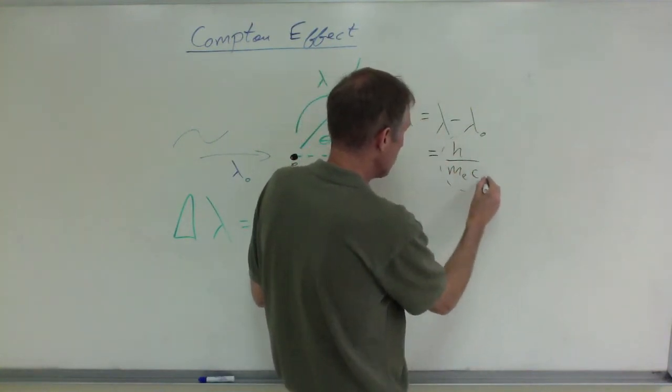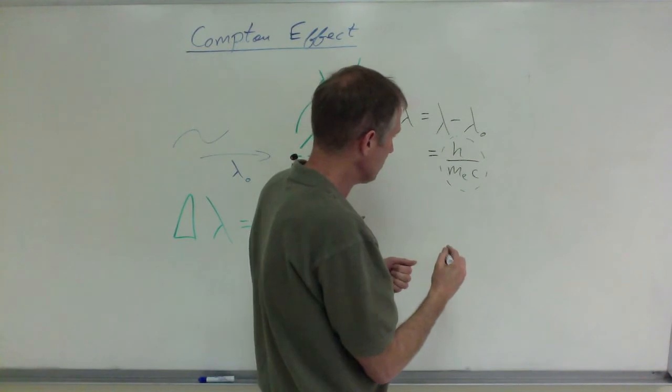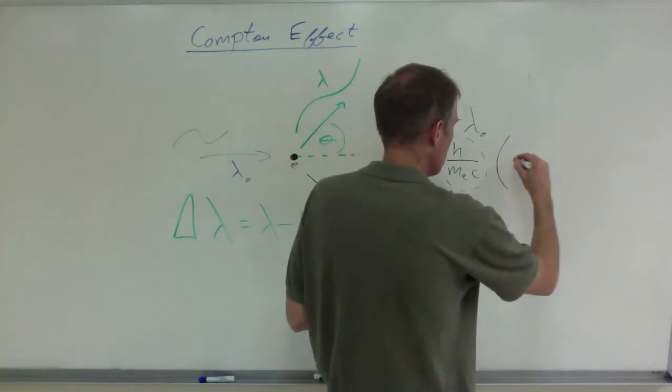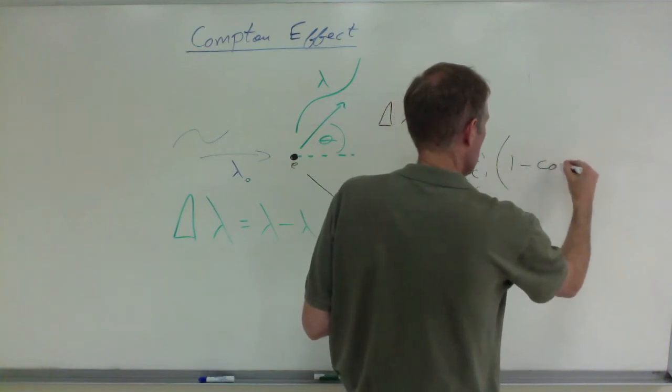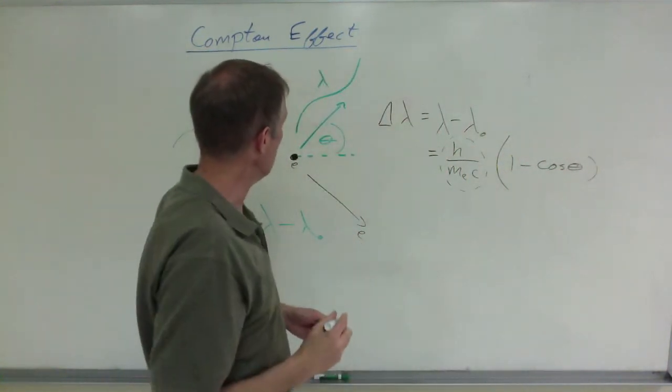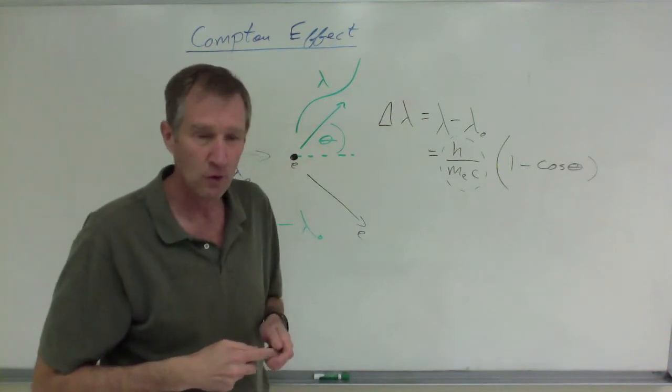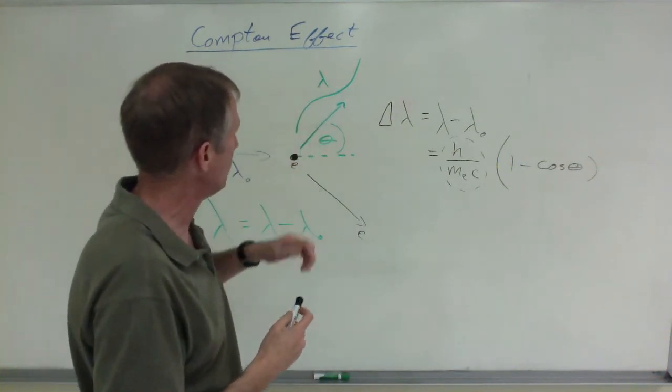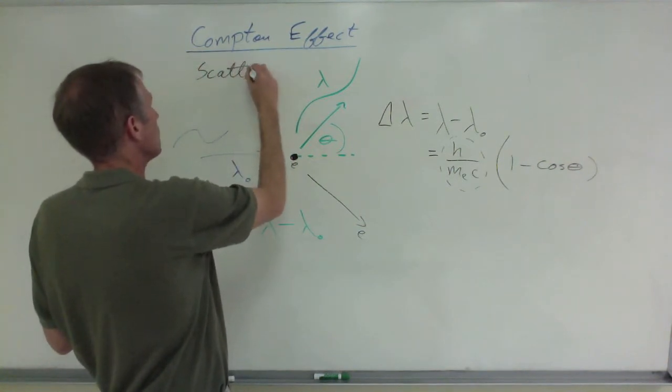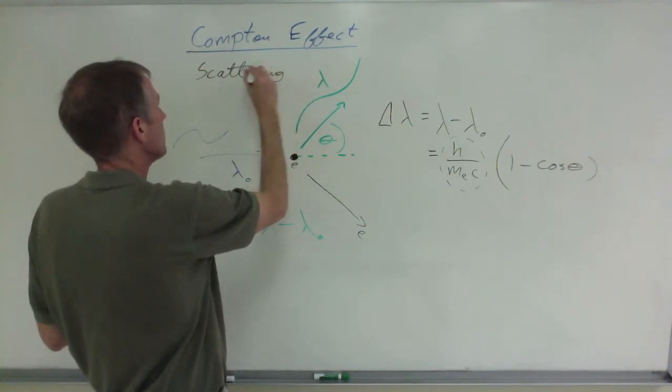Now, this is a constant, right? Those are all constants. In fact, I'm not done yet. That's going to be multiplied in parentheses times 1 minus cosine of that scattering angle. This is sometimes, in fact, it's frequently referred to as Compton scattering.